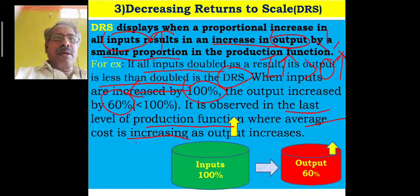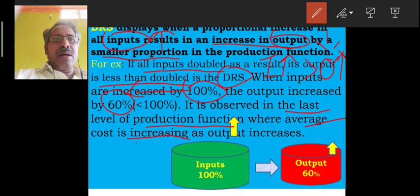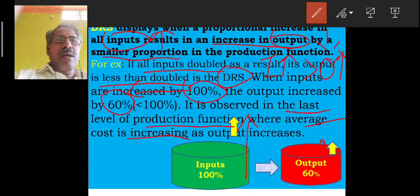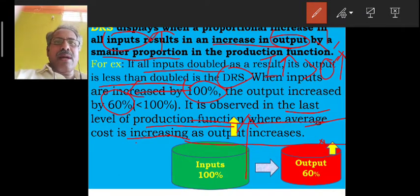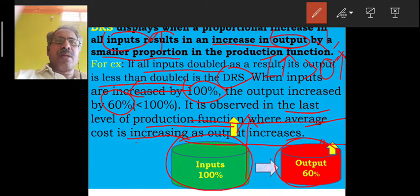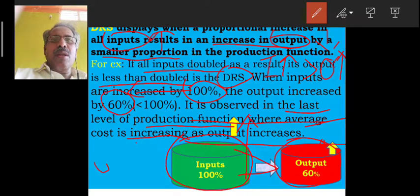The height of the inputs is greater, but the height of the output is smaller. So output is smaller than input. The value of the input is more, and the value of the output is small — input is greater than output. This shows Decreasing Returns to Scale.